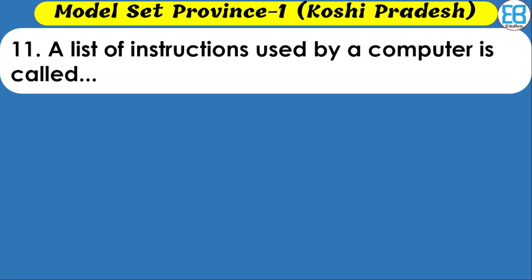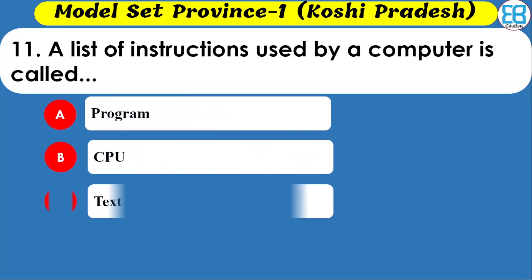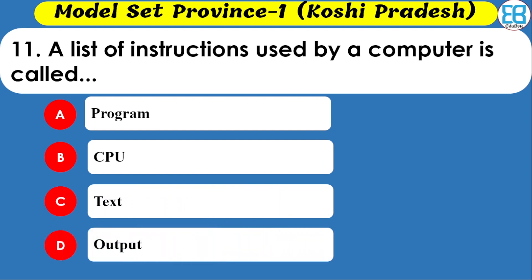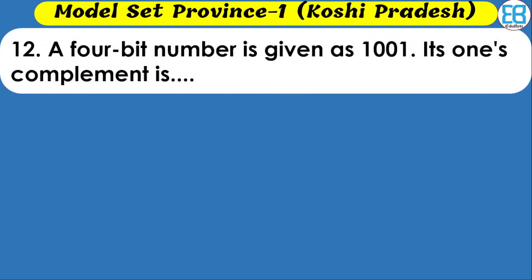A list of instructions used by a computer is called what? Options are program, CPU, text, and output. The correct option is program — a list of instructions used by a computer is called a program.